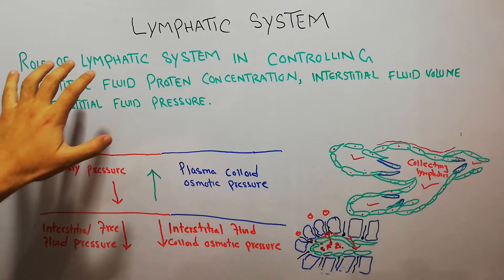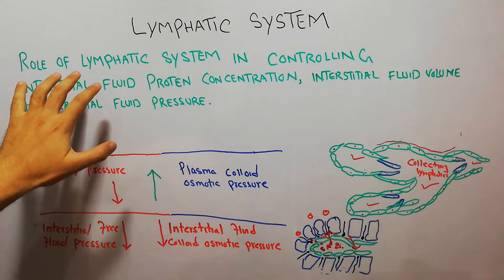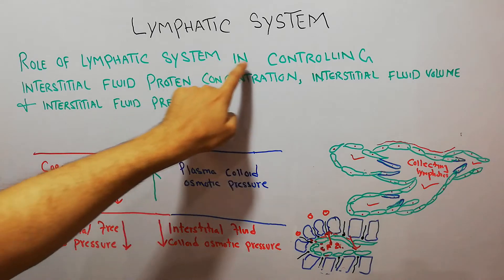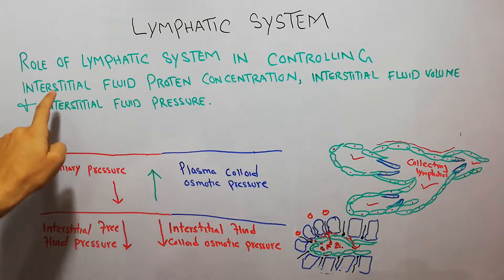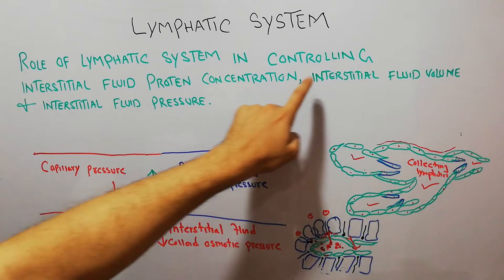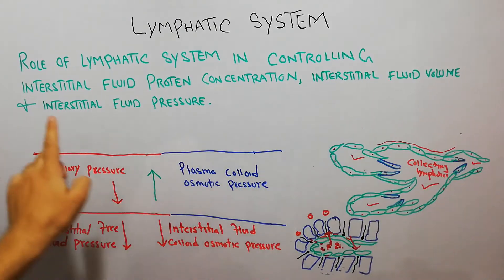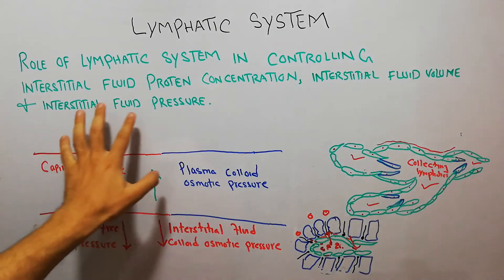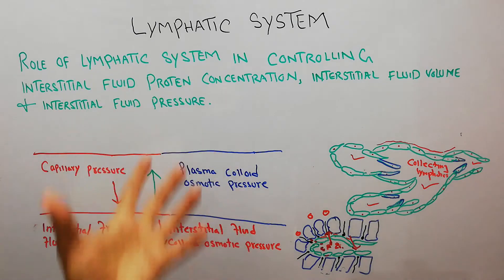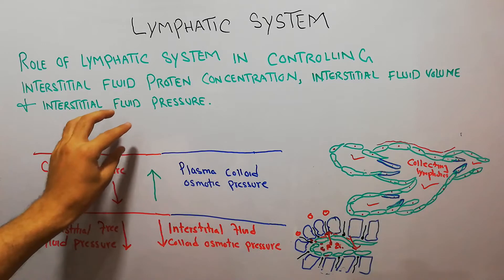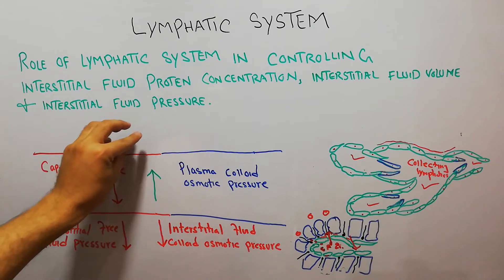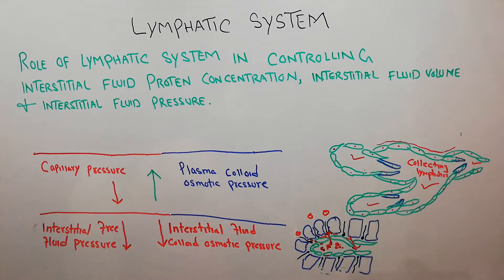Today in this lecture we are going to discuss the role of the lymphatic system in controlling interstitial fluid protein concentration, interstitial fluid volume, and interstitial fluid pressure — how the lymphatics basically control these three parameters.